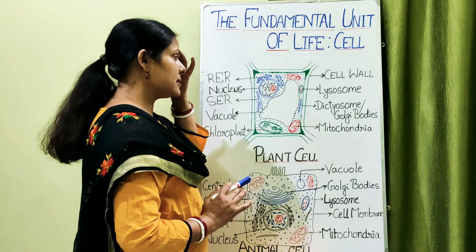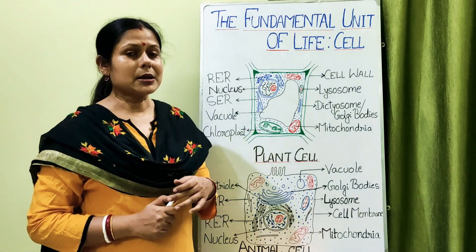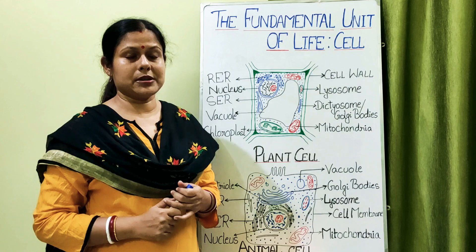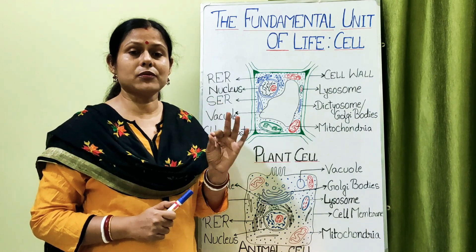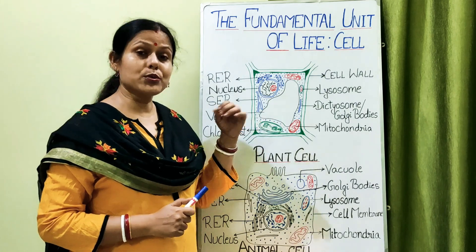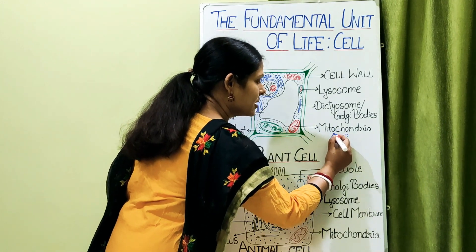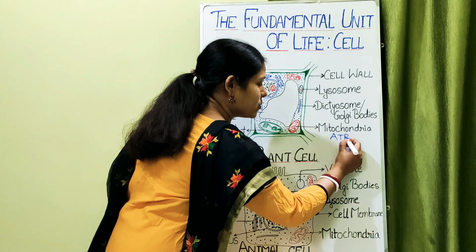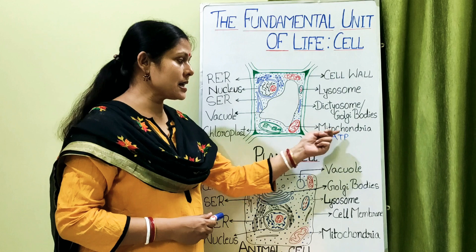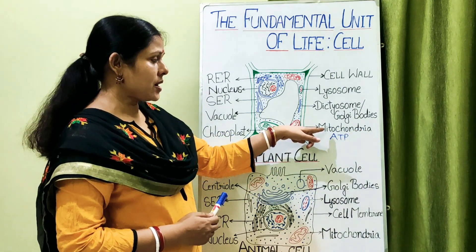The cell organelles present in the plant cell include the mitochondria, which are the powerhouse of the cell. In the mitochondria, oxidation of food substances takes place. Food is broken down to glucose, and this glucose is oxidized in the presence of oxygen to release an energy molecule known as ATP — adenosine triphosphate. Mitochondria are the powerhouse of the cell because ATP, the energy currency, is produced inside them.